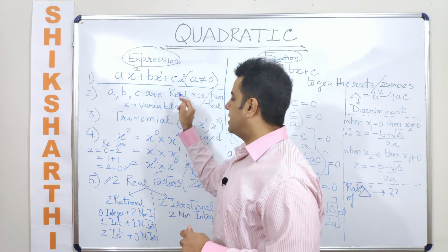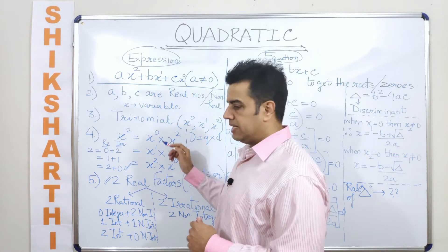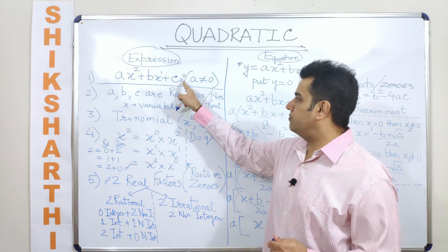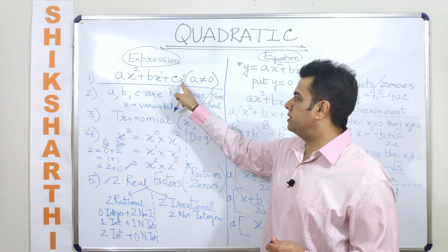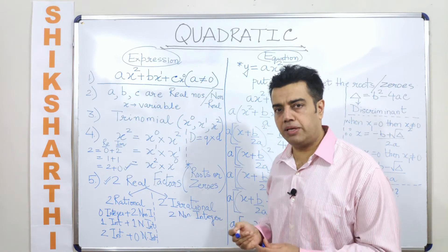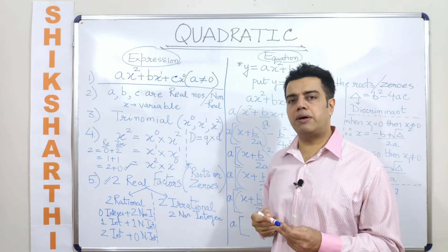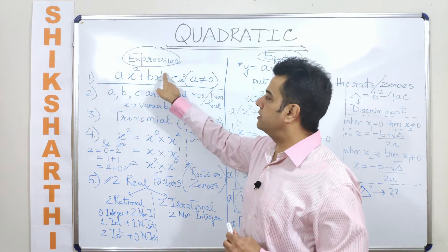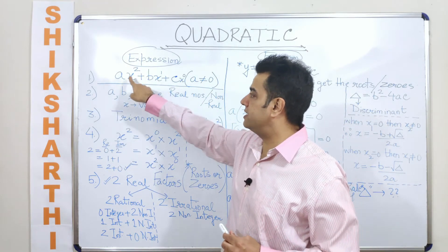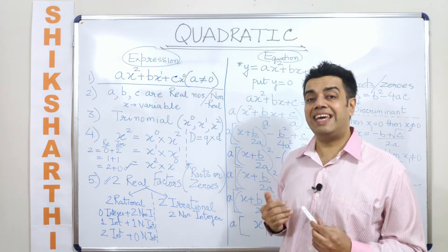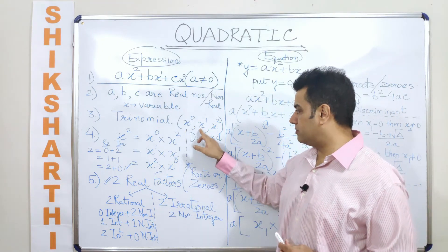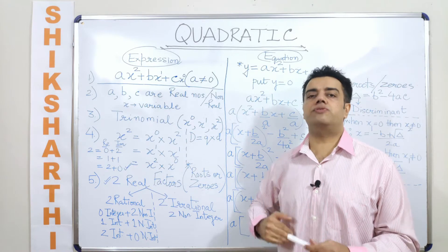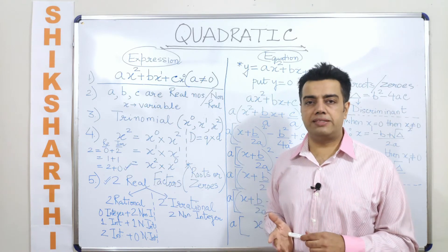Can I call this a trinomial? Yes. We have three powers of x being used here. The minimum power of x is zero, the next power is one, and the highest power is two. So how many powers of x have we used? Three powers of x, which is why we are calling it a trinomial.